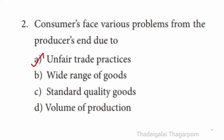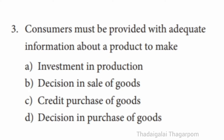Consumers face various problems from the producer's end due to unfair trade practices. Question 3: Consumers must be provided with adequate information about a product to make ___. A. Investment in production, B. Decision in sale of goods, C. Credit purchase of goods, D. Decision in purchase of goods. The correct answer is D — Decision in purchase of goods.